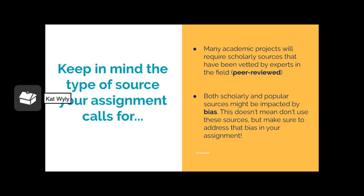When looking at sources, remember to keep in mind the type of source that your assignment or project calls for. Assignments for classes may require using only scholarly sources, because these sources have frequently gone through the peer review process. Remember that both scholarly and popular sources are impacted by bias — the author incorporates their own particular perspectives into their argument. This doesn't mean you have to avoid these sources, but make sure to directly address any bias the author holds as part of your analysis. Remember to use this critical lens when examining any source. Both popular and scholarly sources can provide useful information while supplementing each other during the research process.